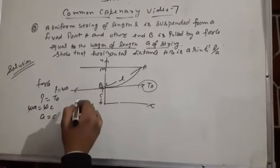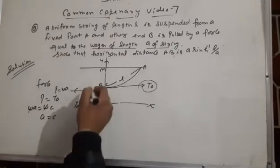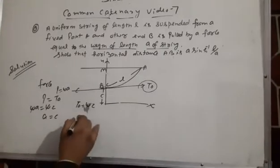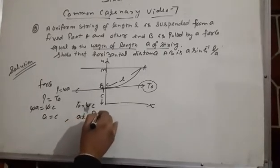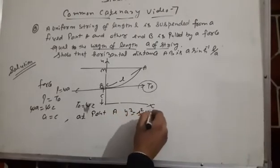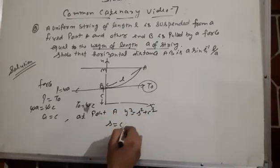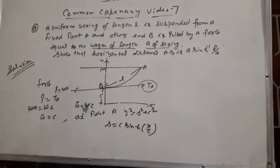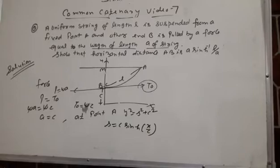At point A, the general form is y² = s² + c² and s = c sinh(x/c). This is the relation between s, c, and x that we've already established in earlier problems.